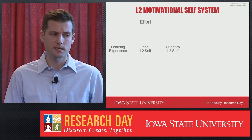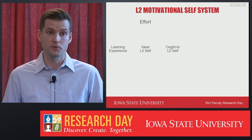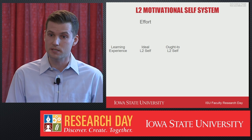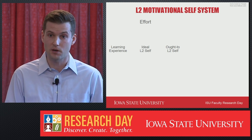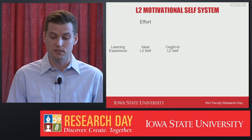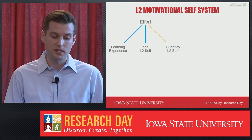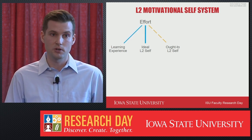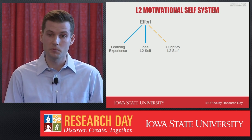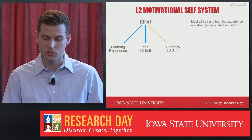In both cases, the ideal L2 self and ought-to L2 self are future-oriented, and so learners are trying to reduce the discrepancy between their current self and their future self, and that process guides their motivated behaviors and actions. Research has shown a relatively strong relationship between the learning experience and effort and between the ideal L2 self and effort. However, the motivational potential of the ought-to L2 self has been called into question.